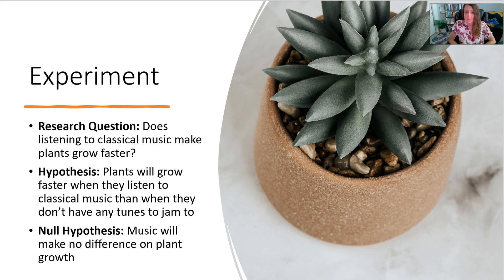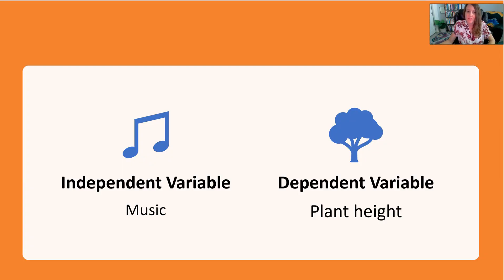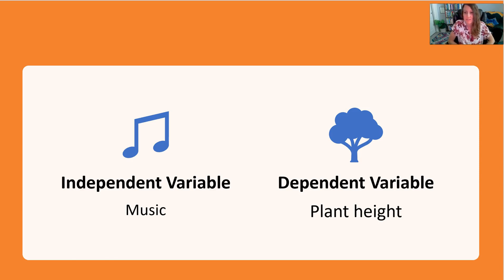Say we design our experiment with two houseplants of the same type, starting around the same size, placed in two separate rooms. One room has Beethoven blasting and the other sits in silence. The independent variable would be whether music is played or not, and the dependent variable would be the plant height. Music would be a qualitative variable, whereas plant height, since it's numerical, is a quantitative variable.